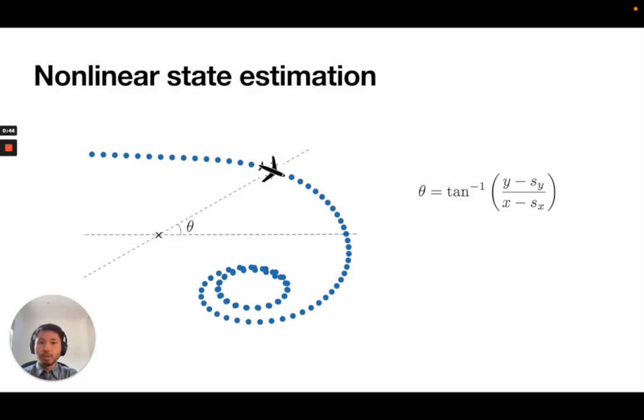For linear systems, the Kalman smoother can be used to find an optimal solution to this problem. However, for non-linear systems such as these, we typically have to rely on sampling methods, which are expensive, or make linearizing assumptions as employed by, for example, the extended Kalman smoother or the unscented Kalman smoother, which can lead to poor results.